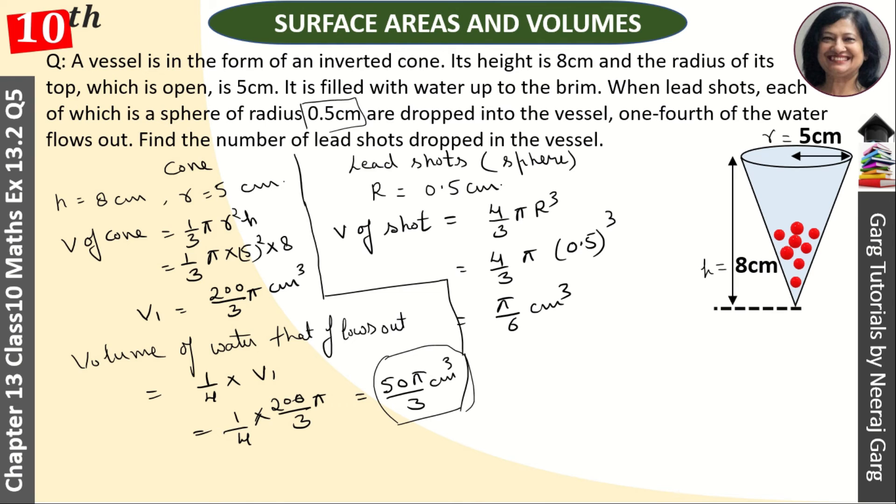So if we divide it by the volume of one shot, we have total number of shots. Number of shots equals volume of water flow out divided by volume of one shot. So it is n into pi by 6 equals 50 pi by 3.